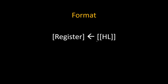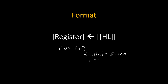What will happen because of this instruction? The format says that the content of content of HL will get transferred inside the register. So let's take an example. Suppose the instruction is MOV B comma M. M is an address stored in the HL register pair. Let's say the content of the HL register pair is 5070H. Then the content of content of HL will be the content of 5070H. What is there on 5070H? Let's say 22H.